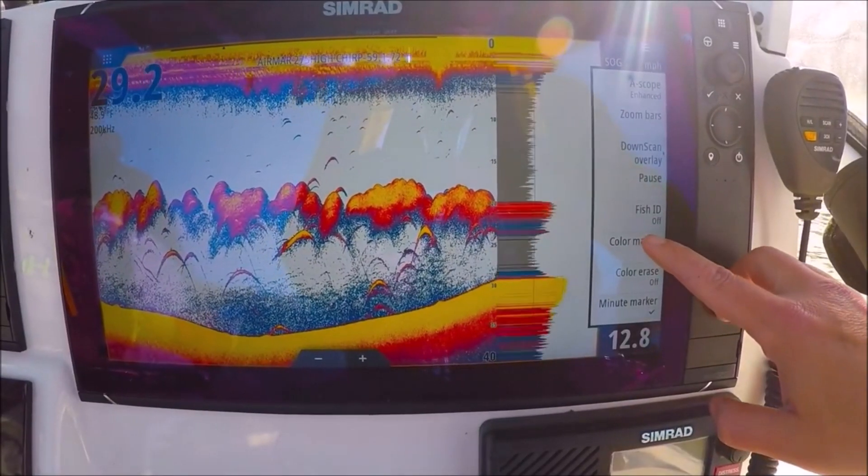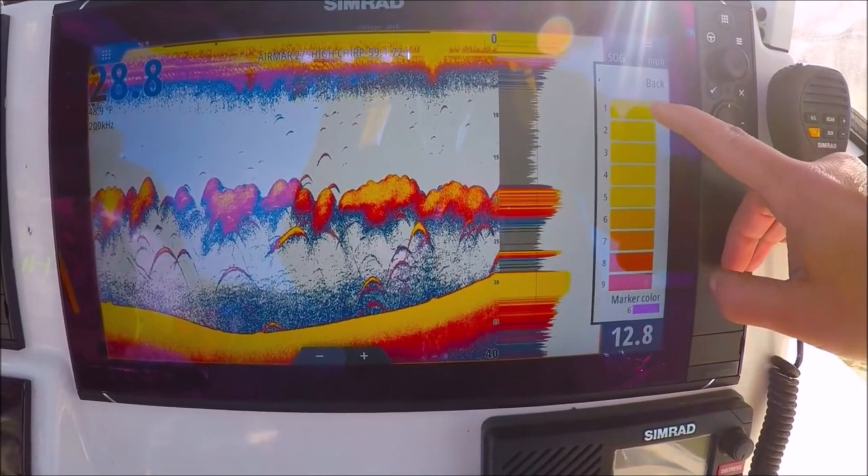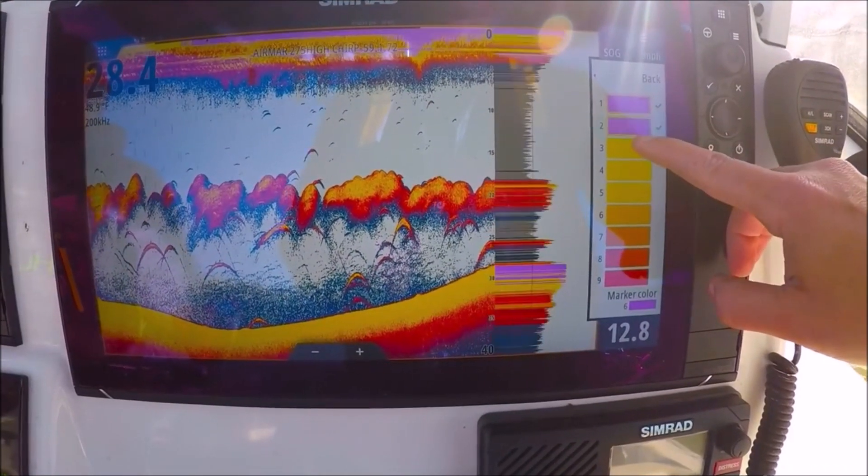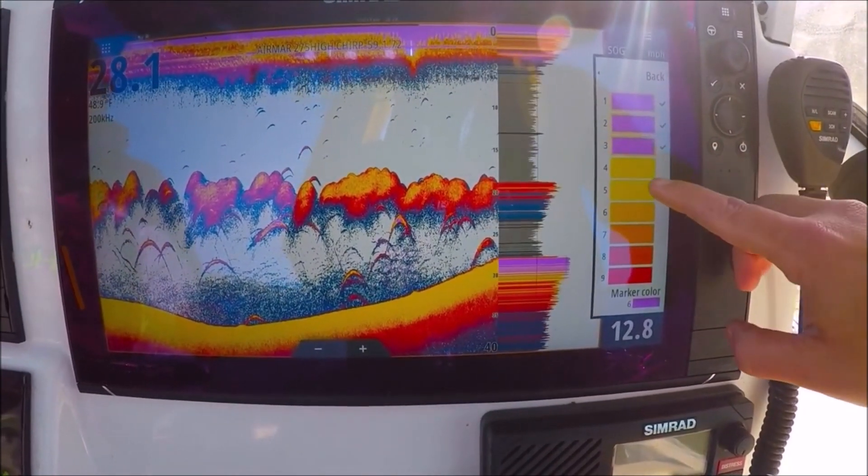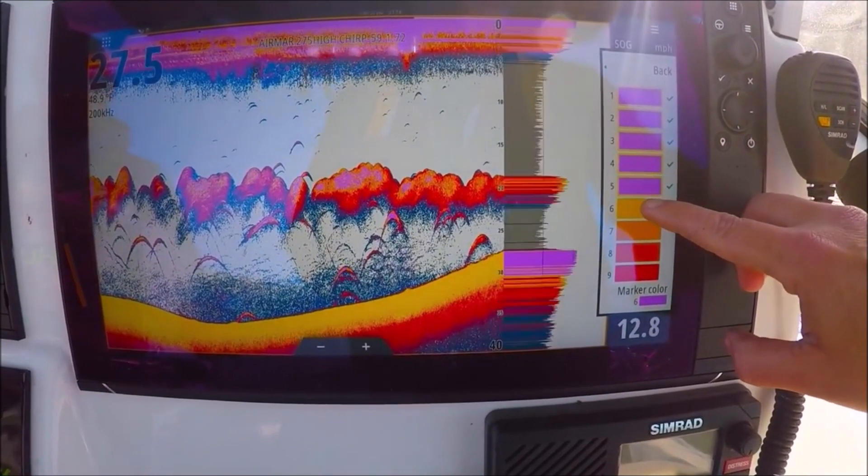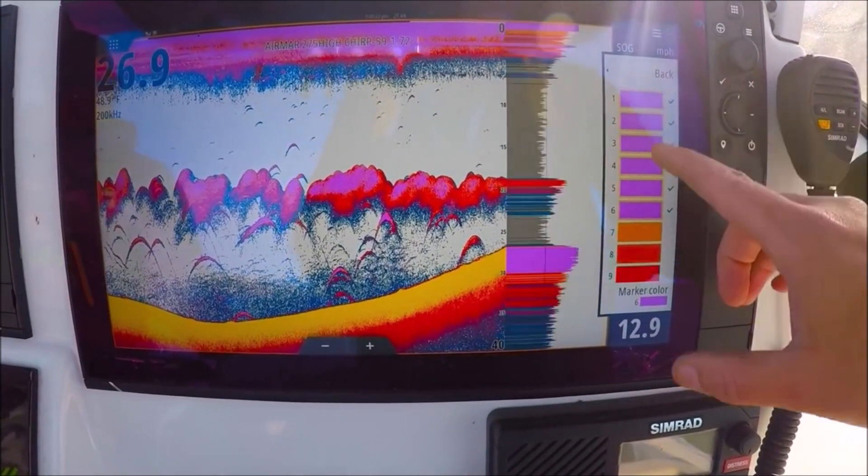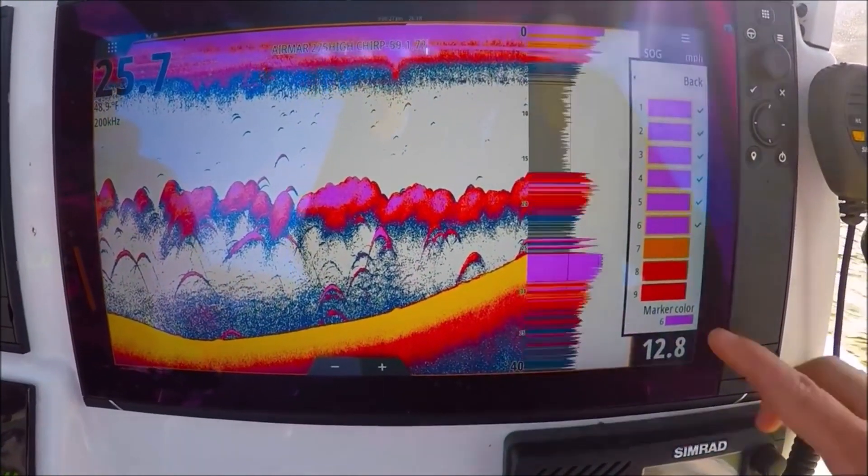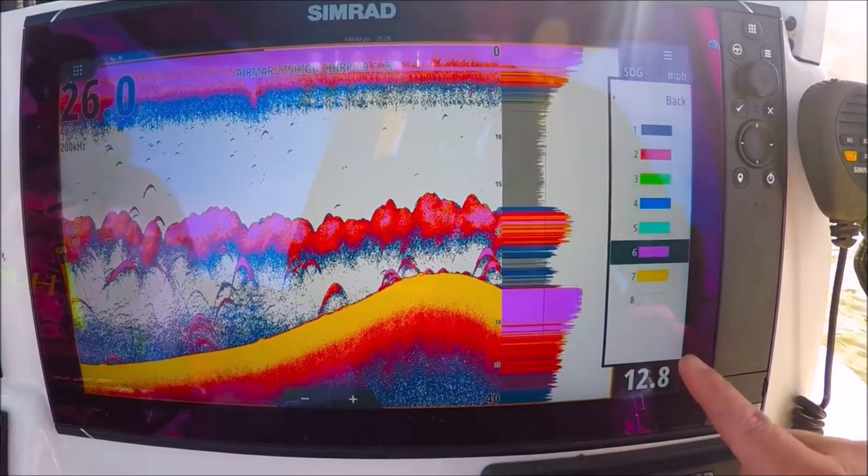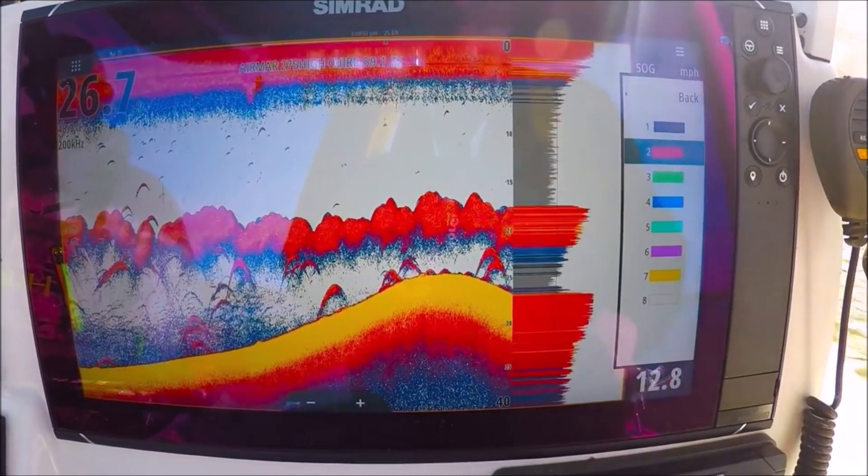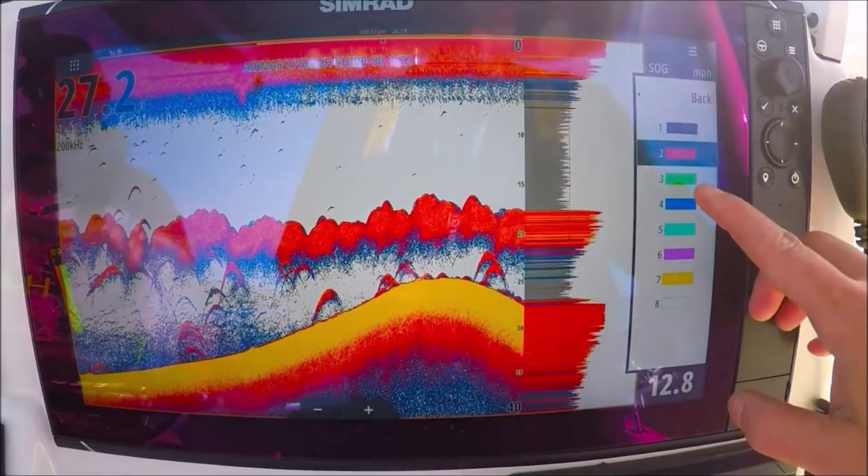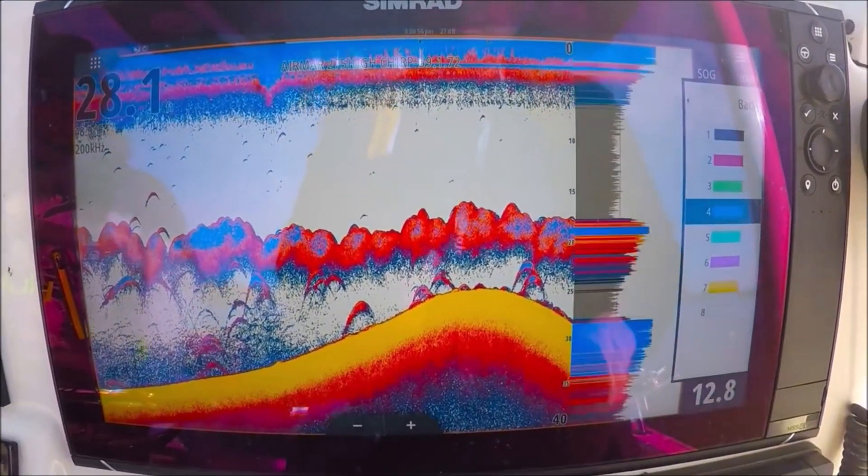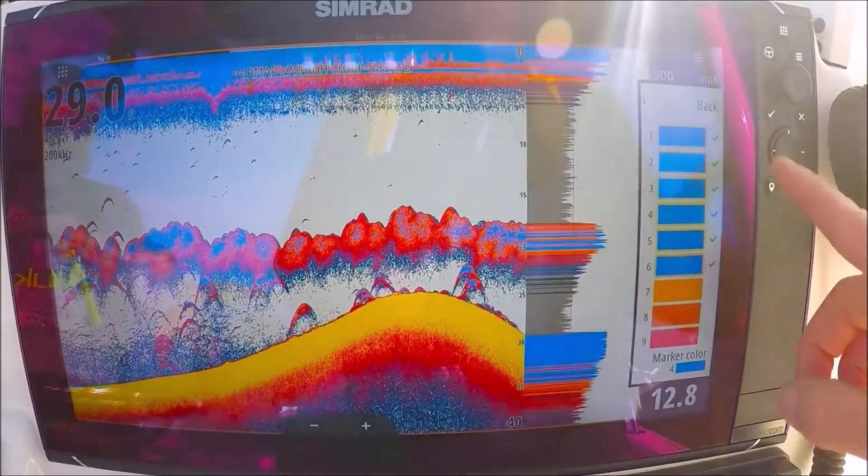Alright, color marker. I'll select that. And what this lets us do is take any color in the palette and exchange it with another color. So let's say we want all the yellows and the strong returns to be purple. There they are, they're all purple. Here's a selection of your colors here. Red, all my strong returns look red. Blue. You can customize your palette further with this feature.